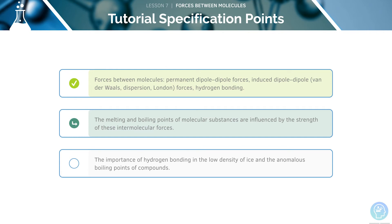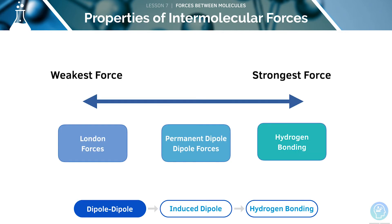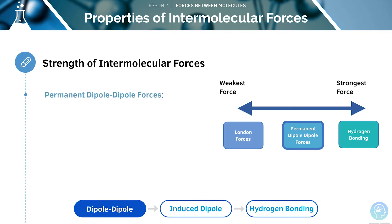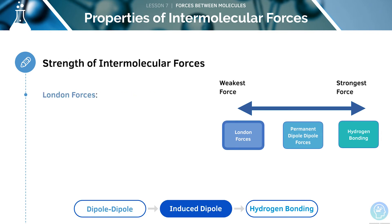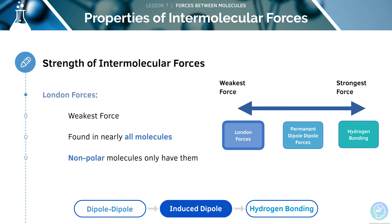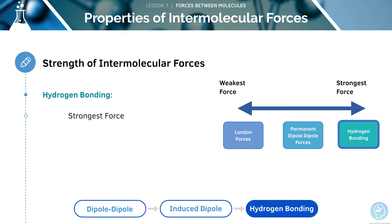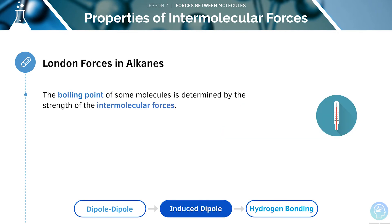Let's look at the melting and boiling points of molecular substances. This diagram shows the strength of each of these forces. Permanent dipole-dipole forces are stronger than London forces but weaker than hydrogen bonds. London forces are the weakest of the three intermolecular forces and are found in almost every molecule. Non-polar molecules only have London forces, but polar molecules will have London forces plus many others. Hydrogen bonding is the strongest force, and the strength of these intermolecular forces determines the boiling points of certain molecules.